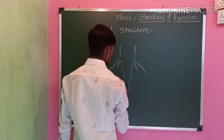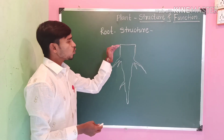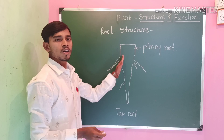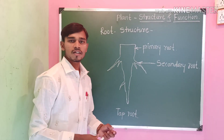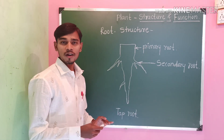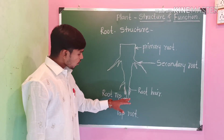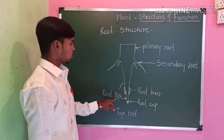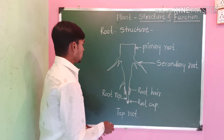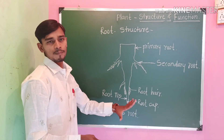Root structure. There are two types of root: tap root and fibrous root. There is a primary root and a secondary root. The root bears hair-like structures near the tip called root hair. The root tip is covered with a cap-like structure called the root cap.